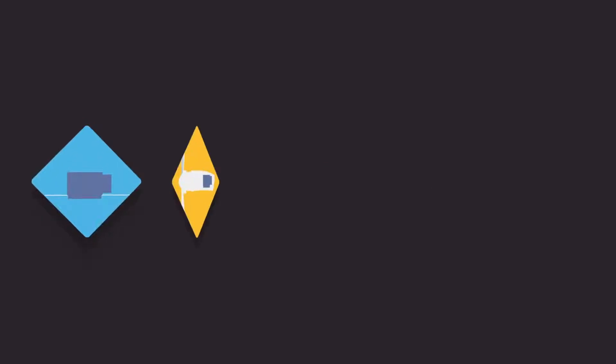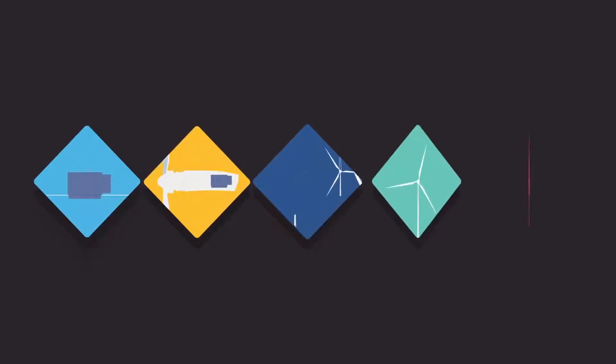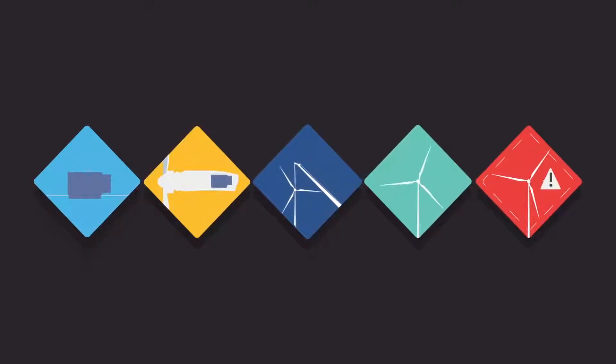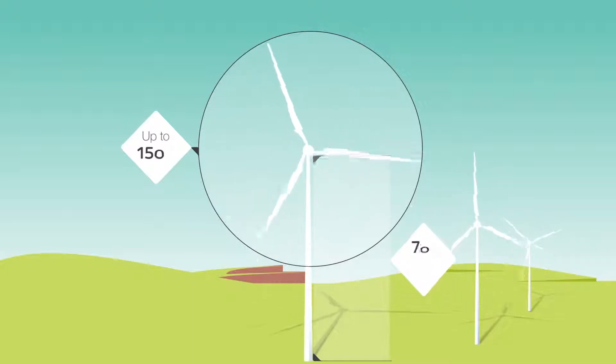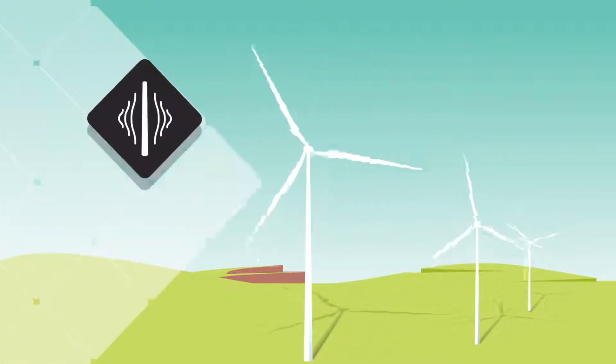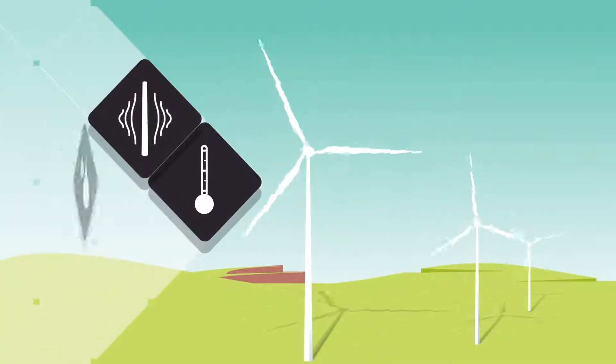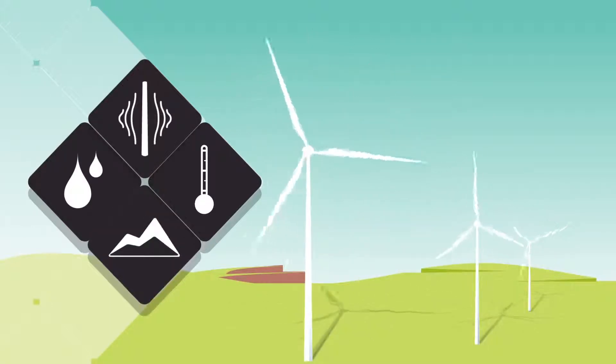Mersen's expertise covers the entire wind turbine life cycle, from production to operation. Its solutions are designed to meet these huge structures' extreme operating constraints, which include vibrations and temperature swings, humidity and altitude.